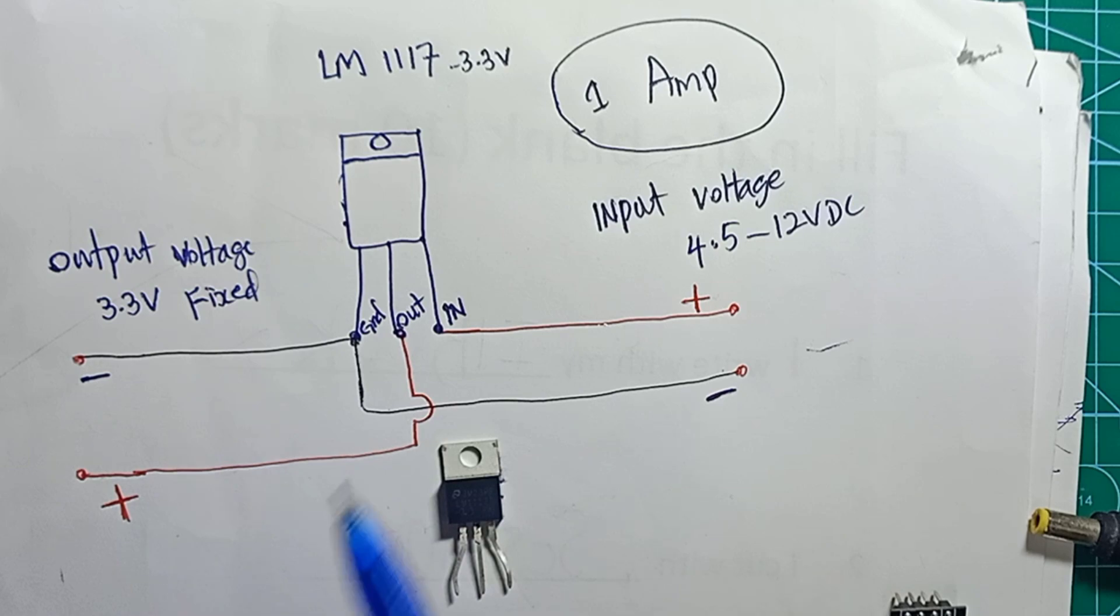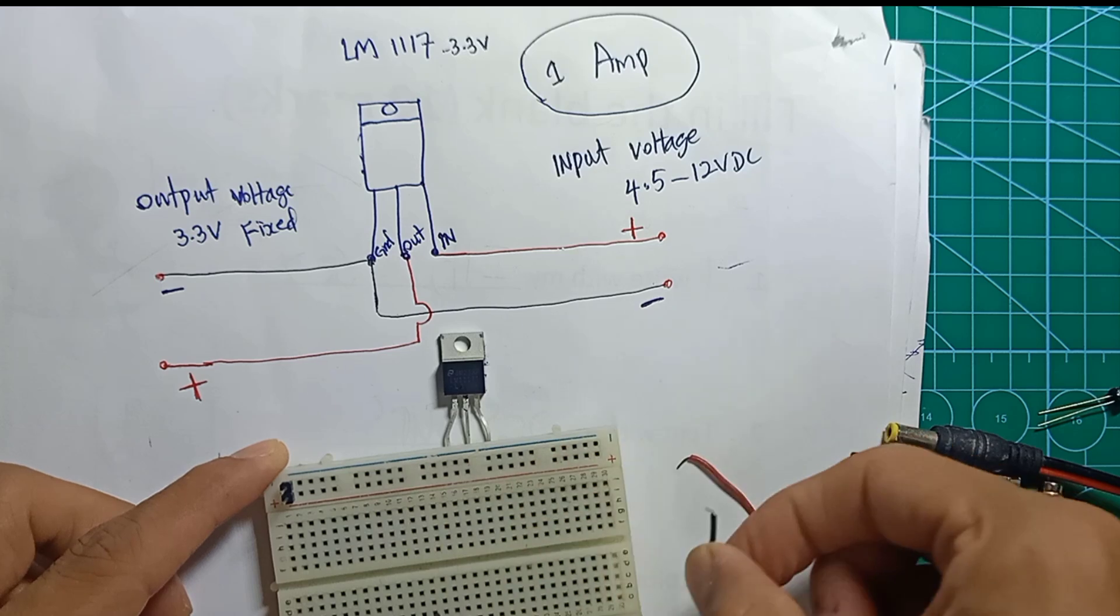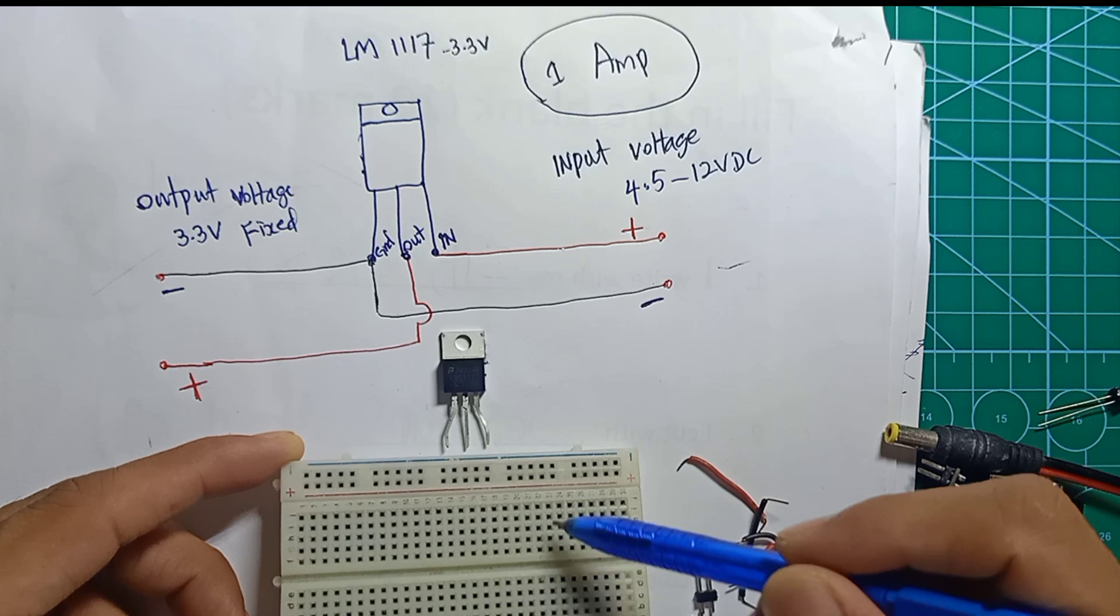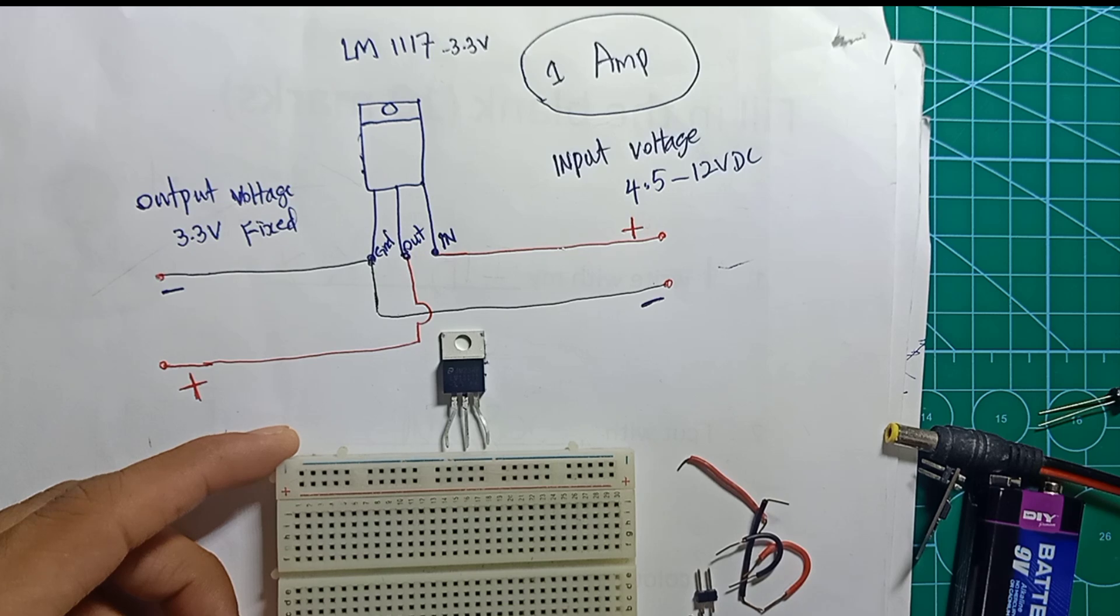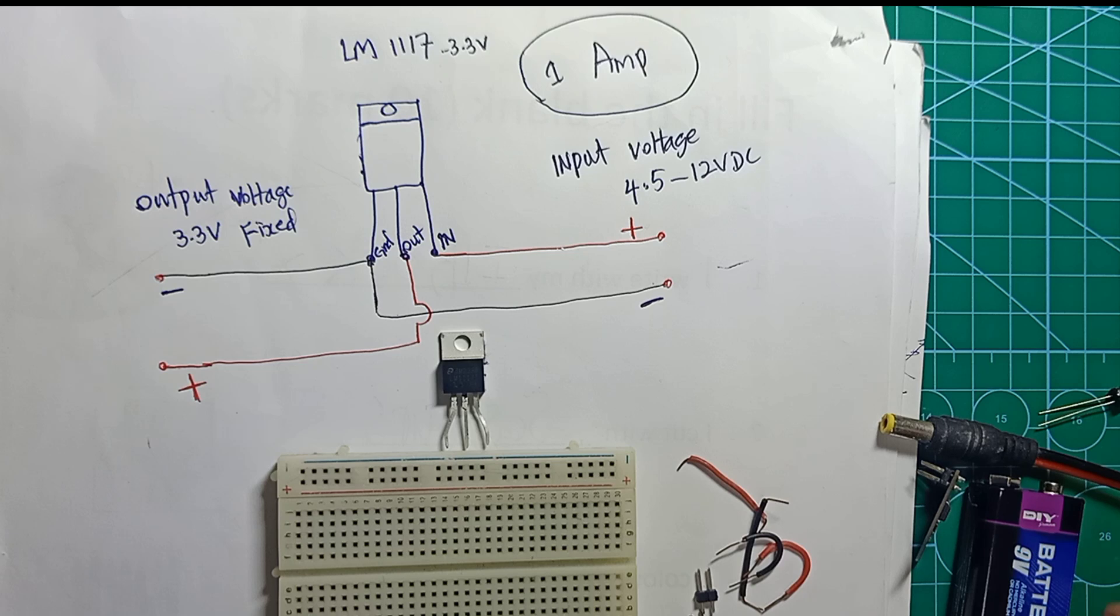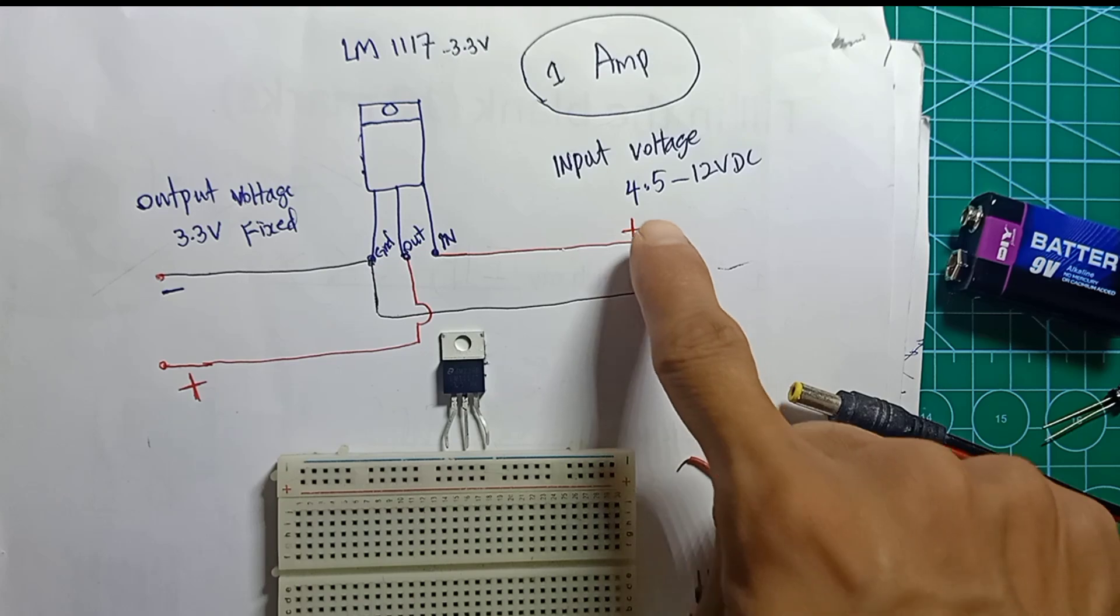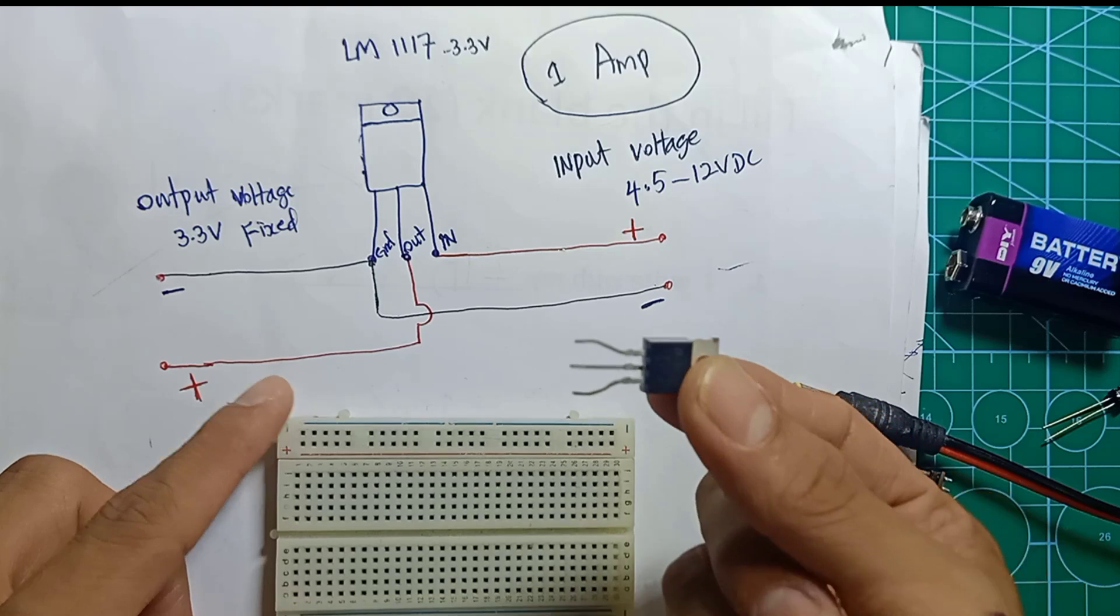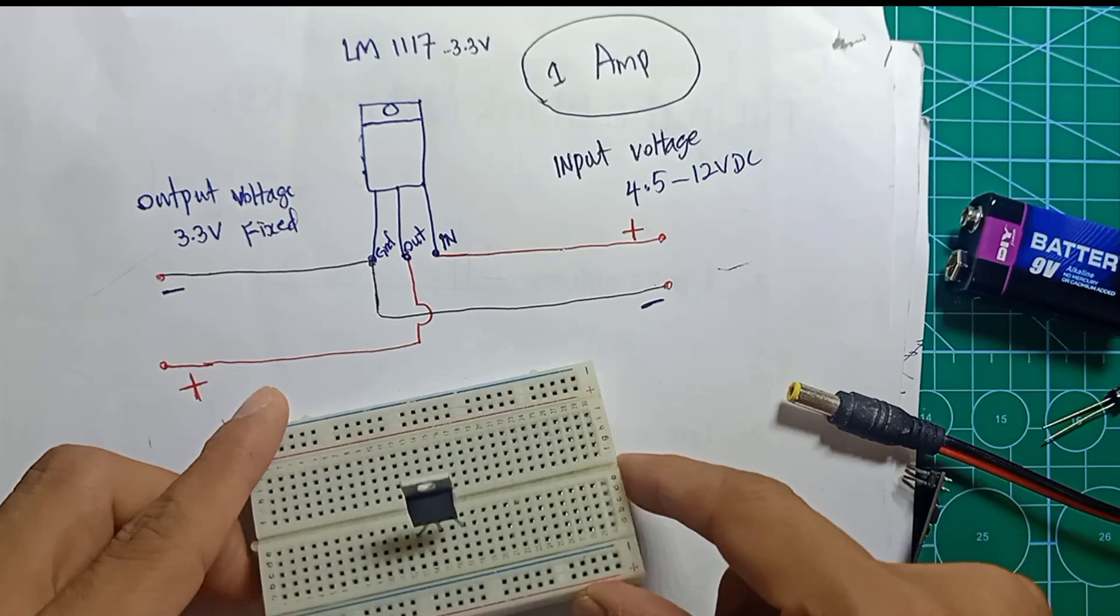This is very simple. I have a breadboard here. The breadboard connection - this is the connection line and this is the connection line. Since the input is between 4.5 to 12 volts, you can use either 9 volt or 12 volt power supply or 12 volt battery. I'm going to test this on the breadboard.